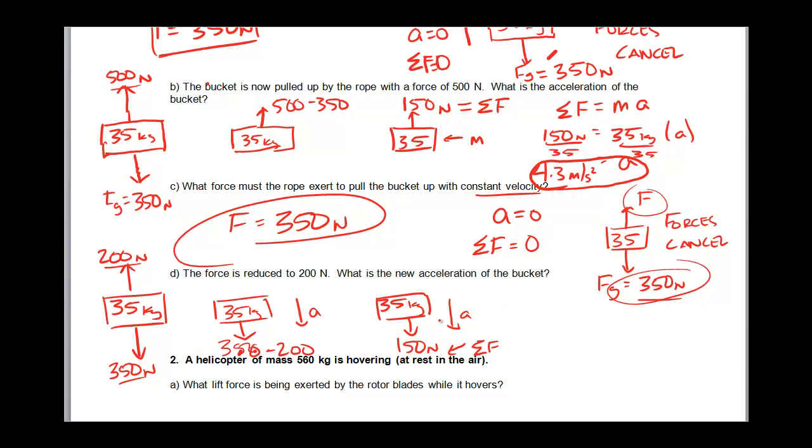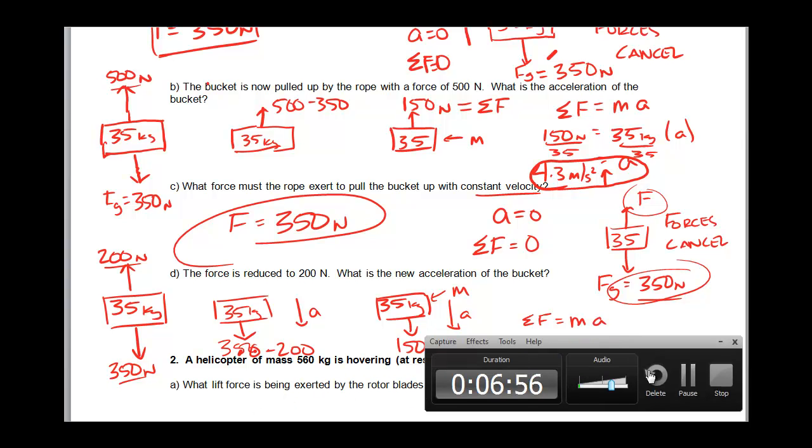So that's my net force. That's my mass. So the net force is equal to the mass times the acceleration. 150 equals 35 times the acceleration. And my acceleration comes out to be, in the downward direction, 4.3 meters per second squared. But remember, this acceleration is down and this acceleration was up. Thank you very much.